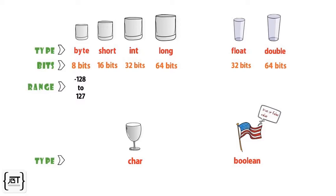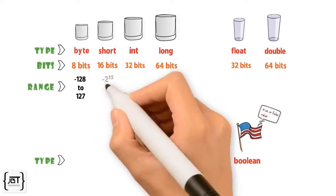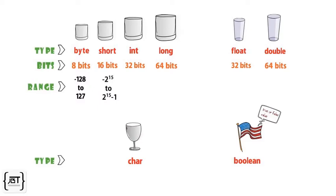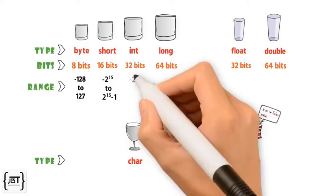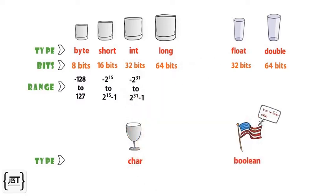Short variable has a range of minus 2 to the power of 15 to 2 to the power of 15 minus 1. Int variable has a range of minus 2 to the power of 31 to 2 to the power of 31 minus 1. Long has a range of minus 2 to the power of 63 to 2 to the power of 63 minus 1.